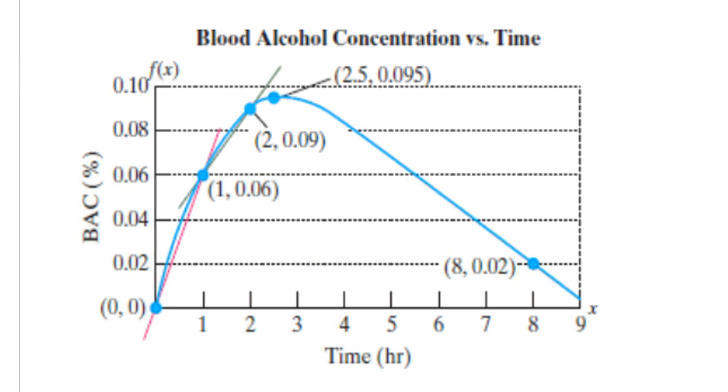The graph we're looking at now shows the blood alcohol concentration, or the BAC, for an individual over a period of 9 hours.